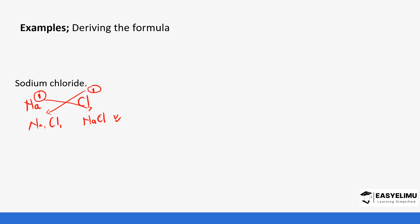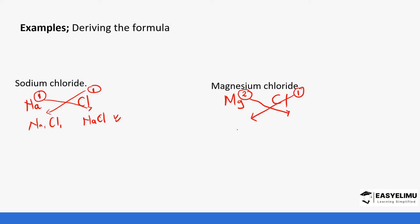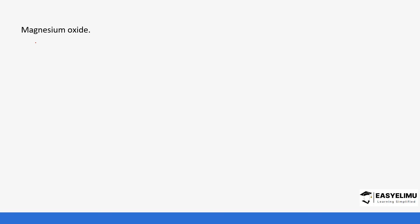Another example: magnesium chloride. The cation is magnesium (Mg) and the anion is chlorine (Cl). The valency of magnesium is two and the valency of chlorine is one. Crisscross the valencies: bring the two here and the one here. You get magnesium with a one and chlorine with a two. We don't write one, so it becomes MgCl2. That is our final answer.